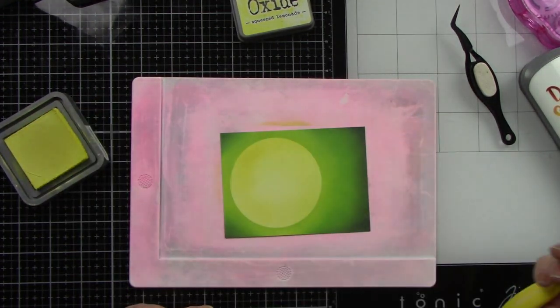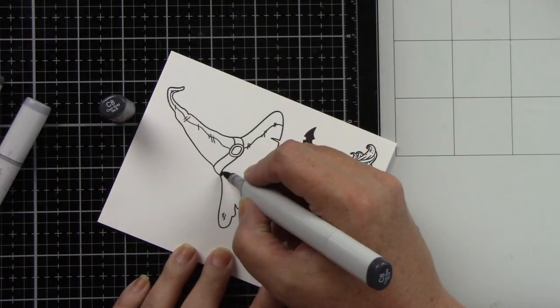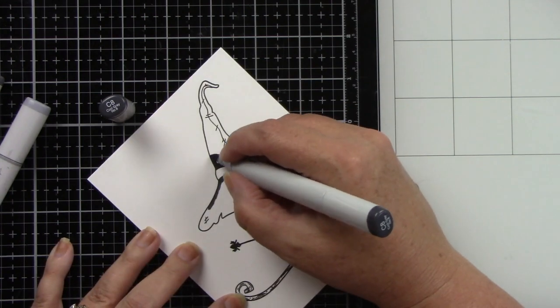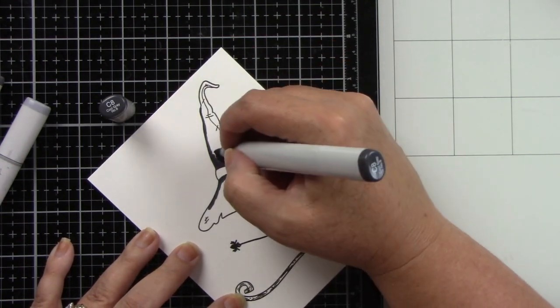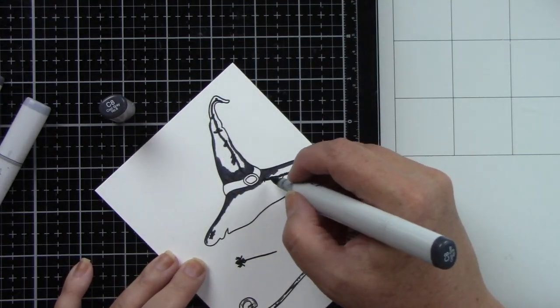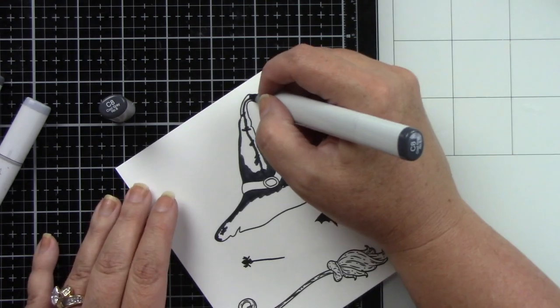I'm putting that aside to dry. I stamped the largest witch hat, the broom, the little spider, and the bat in black ink—the Intense Black ink from Honeybee Stamps.